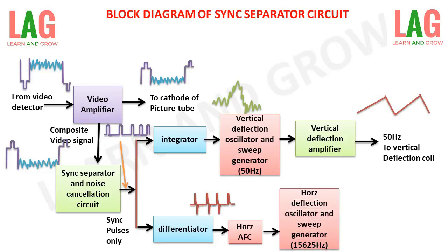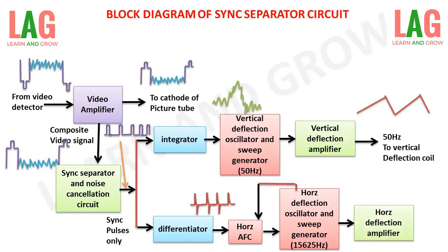The spike pulse is applied as input to the horizontal automatic frequency controller, which is used for controlling the frequency of the applied signal. The output of the horizontal frequency controller is applied to the horizontal deflection oscillator, and the signal is fed back to the automatic frequency controller to control the voltage across the circuit. The output of the horizontal deflection oscillator is a sawtooth wave with a frequency of 15625 Hz, which is called horizontal deflection.